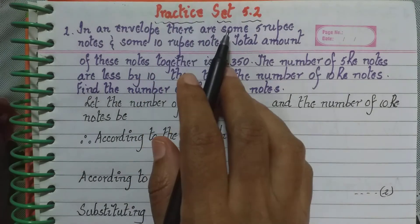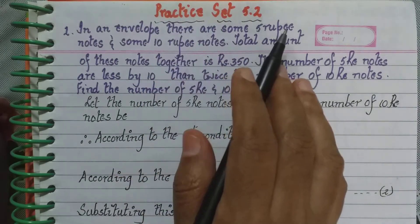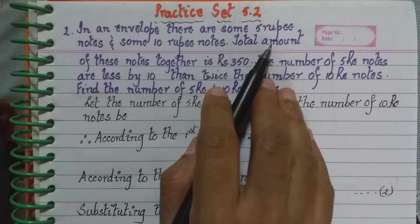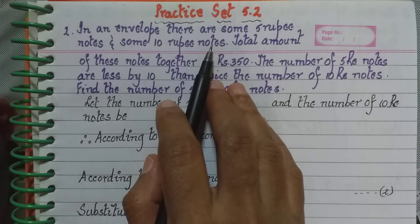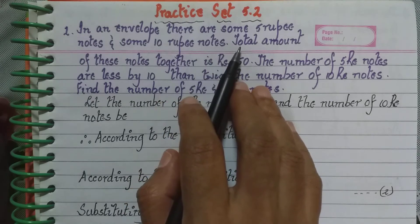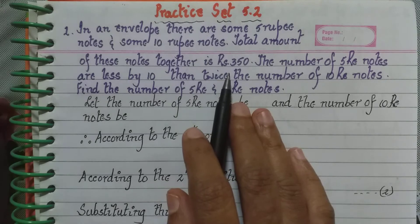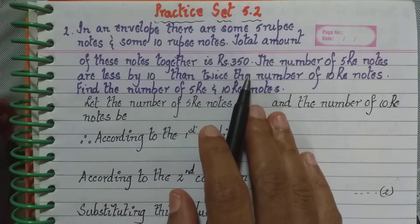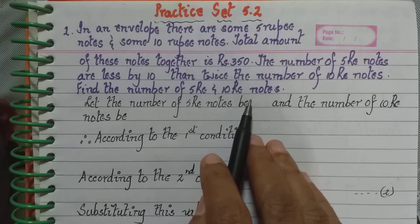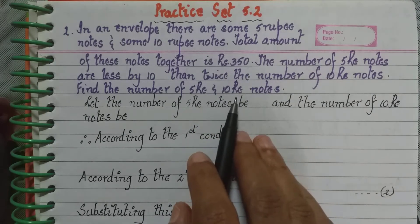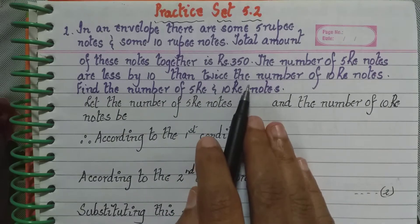Coming to Practice Set 5.2. The difference between Practice Set 5.1 and 5.2 is that in 5.1 the equations were already given to us, whereas in Practice Set 5.2 we will form the equations from the statements given in the question, then solve the equations, and put the answers back into the statement problem.